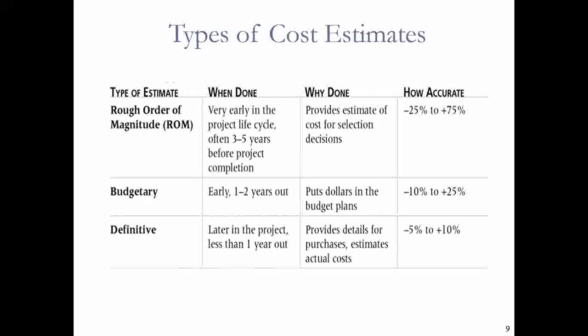The rough order of magnitude provides an estimate of cost for selection purposes, and accuracy is good because you plan well in advance before you commence. You can easily monitor everything and make adjustments and projections three to five years or more ahead. There is also the budgetary estimate, which takes a shorter period — just one to two years out. It puts the dollars in the budget plan, and is done shortly before you commence the project, as opposed to the rough order of magnitude which is done much earlier.